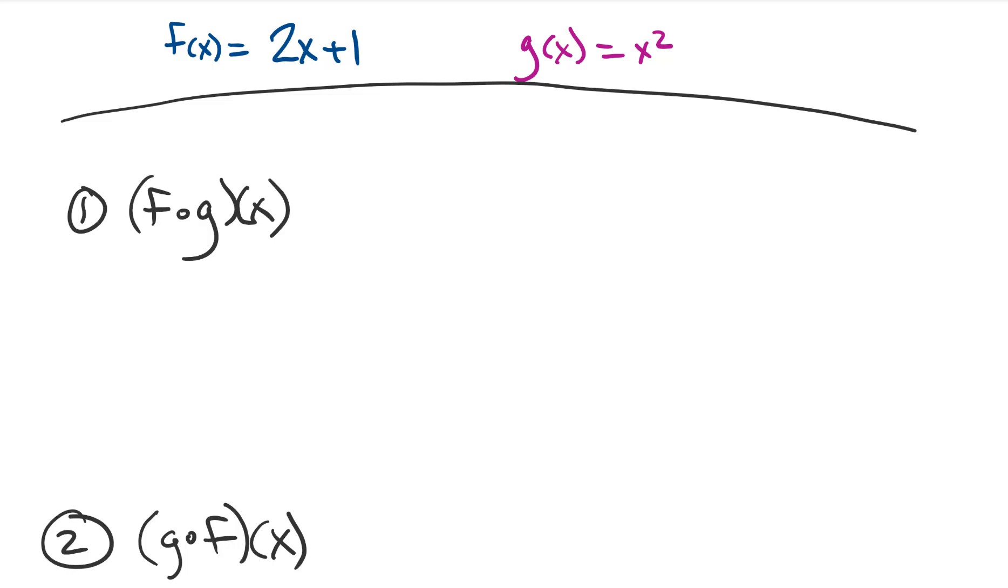Now we have this weird little notation, this little degree symbol that's in between the two. This means the composite of two functions. I'm not going to go into great lengths. There are Khan Academy videos. You can watch these things all day long. I'm just kind of short cutting you through.